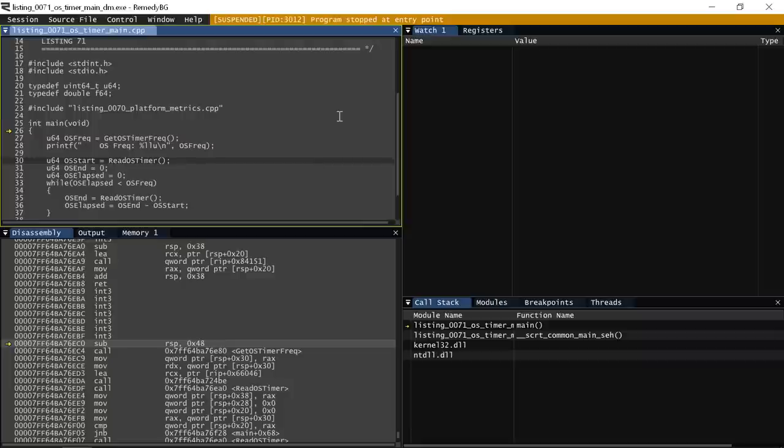Let's take a look at what happens if we just inspect a call to query performance counter. Because I don't have the source code to Microsoft Windows, what I have to do is use a debugger, which can show me the disassembly of the Windows functions that I call.